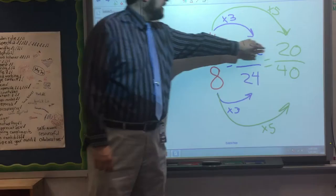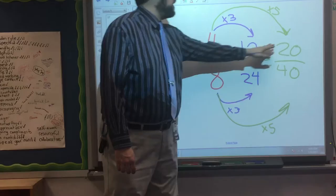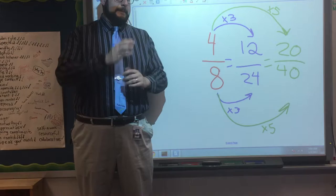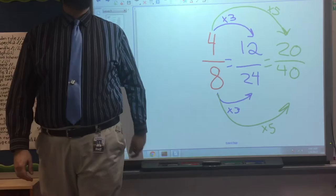Now, this is an important thing to remember because what do you notice about the size of our numerators and the size of our denominators as we go further and multiply by bigger and bigger numbers? Yeah. They're getting bigger and bigger and bigger. Four, twelve, twenty, eight, twenty-four, forty. They're getting larger. Here's a question. I want you to take time to think about this. Does that mean our fractions are getting bigger? Think about that one for a second. Are the fractions getting bigger? What do you think? No. No. Right.